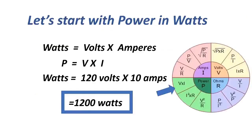Let's start with power in watts. Watts equals volts times amperes, or P equals V times I, which equals 120 volts times 10 amperes, equals 1,200 watts.